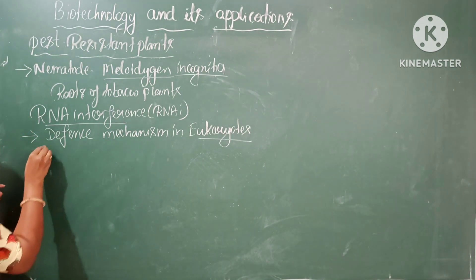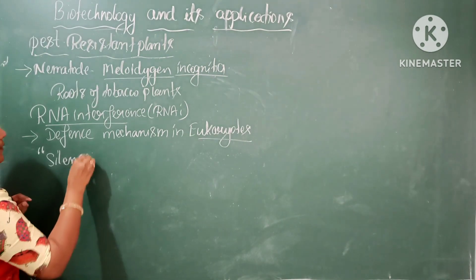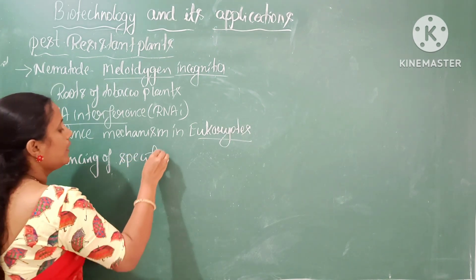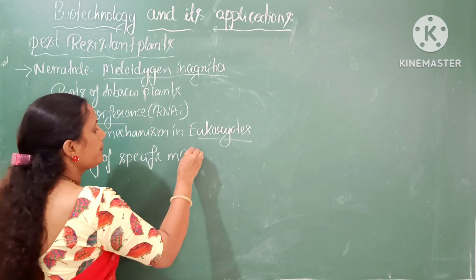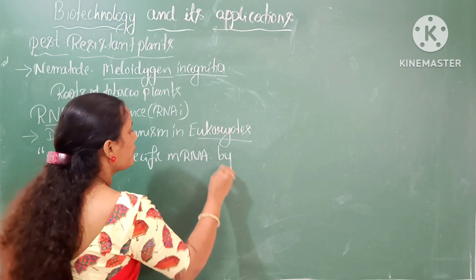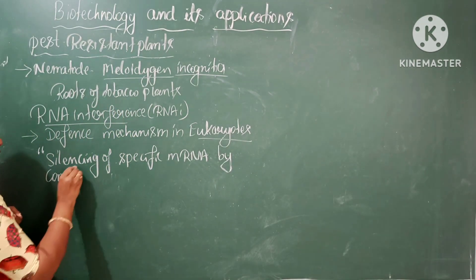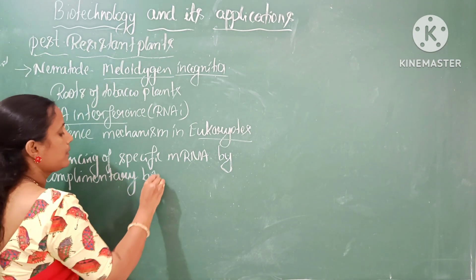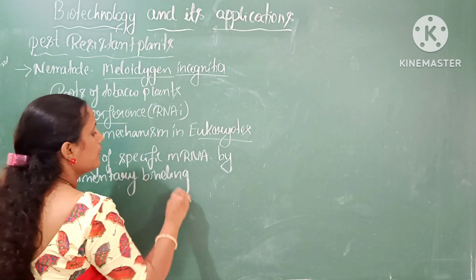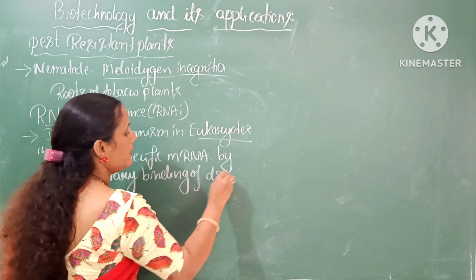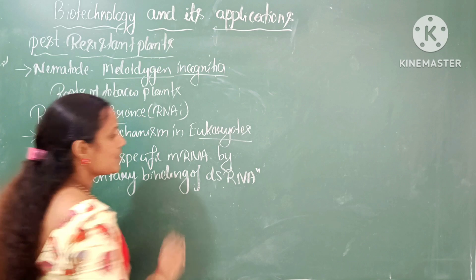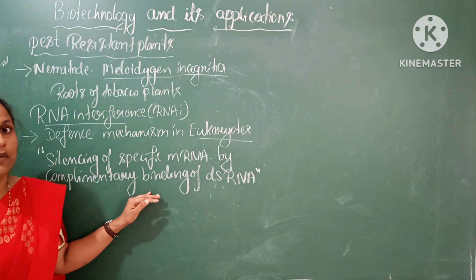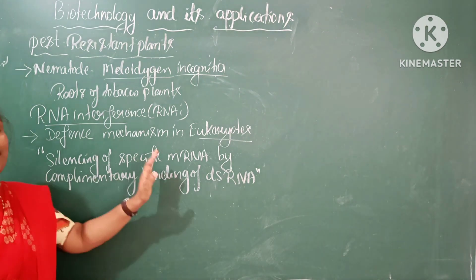RNA interference is the silencing of specific mRNA by complementary binding of double-stranded RNA. This is called RNA interference. Let us take up the mechanism — once you understand what happens, you will understand the definition.